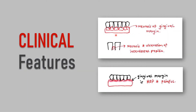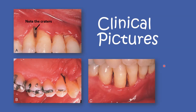From these diagrams you can observe necrosis of the gingival margin, necrosis and ulceration of the interdental papillae, and erythema of the gingival margin — the gingival margin is red and painful. These are the main clinical features, along with attachment loss and bone loss. From this clinical picture, you can note the craters occurring in NUP due to attachment loss and bone loss, and erythema, necrosis, and ulceration of the gingival margin.